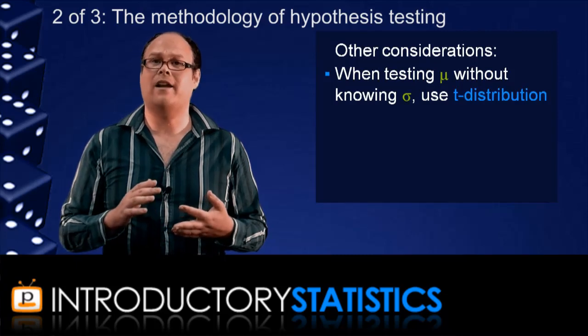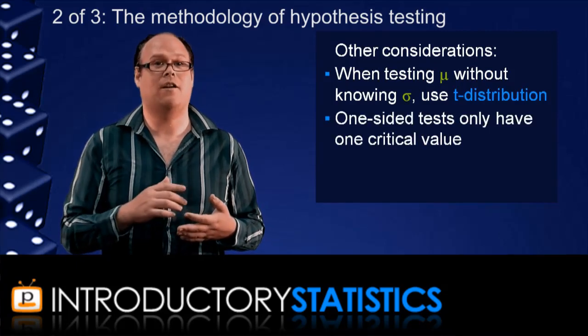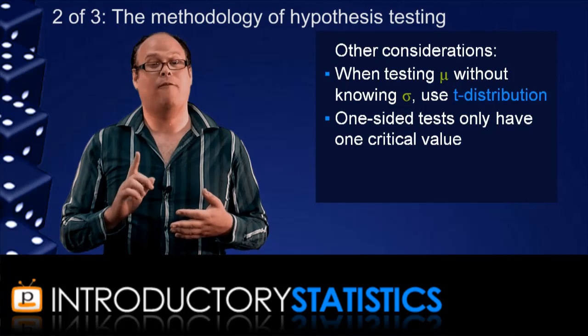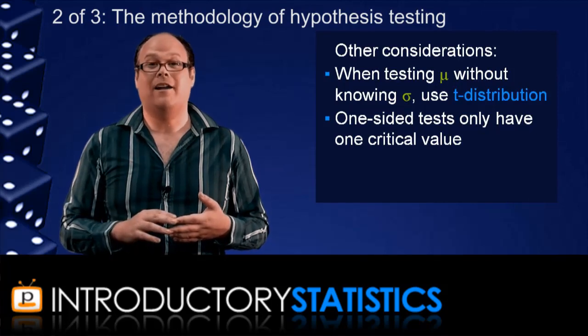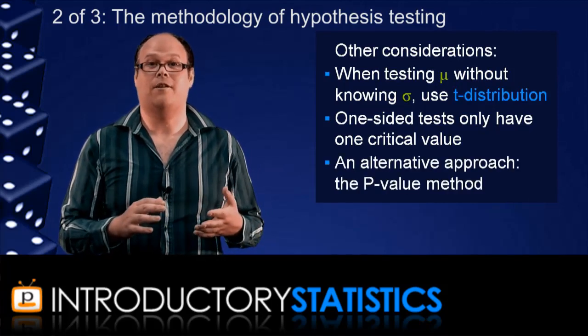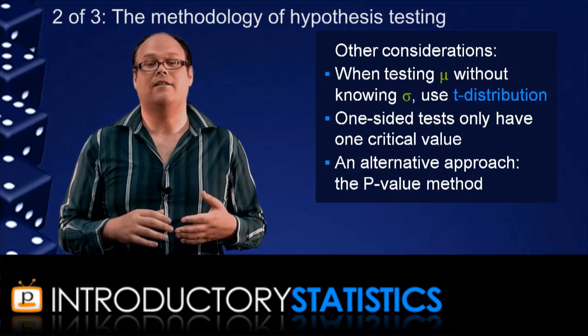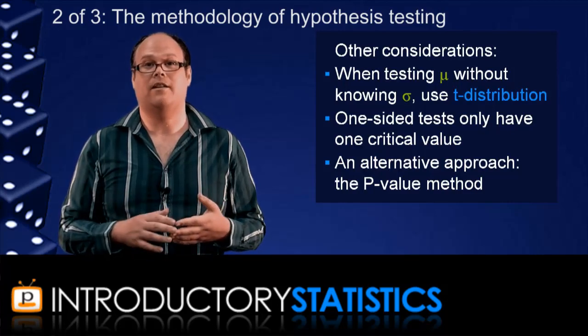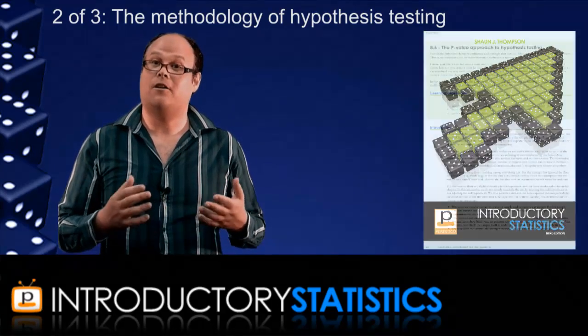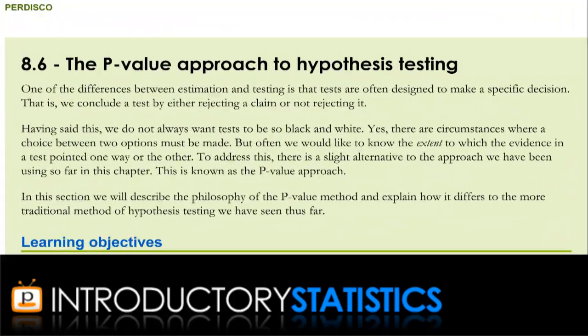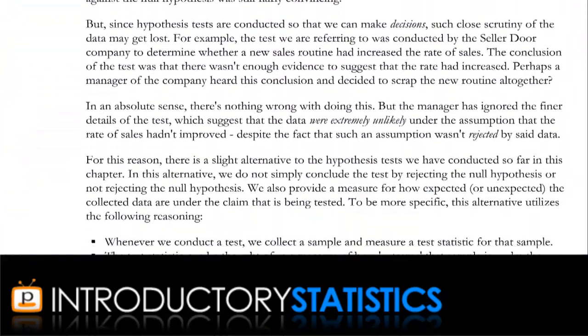Secondly, if you're running a one-sided test, unlike the two-sided test we just saw, you only have one critical value. And finally, there is an alternative to the approach I've just been talking about, known as the p-value method to hypothesis testing. But, the chapter on hypothesis testing in the Pedisco textbook gives a comprehensive look at all of these topics.